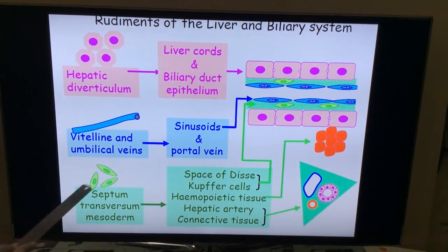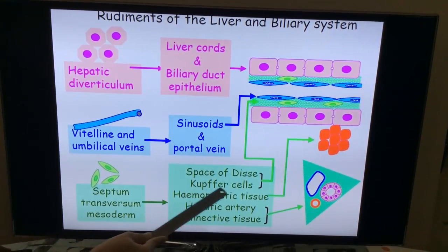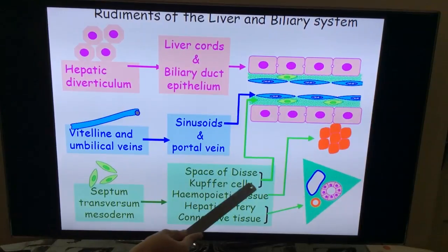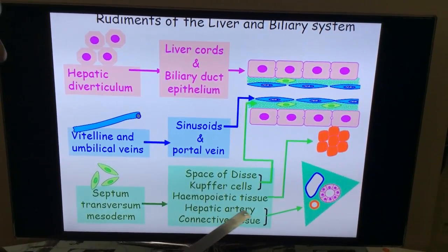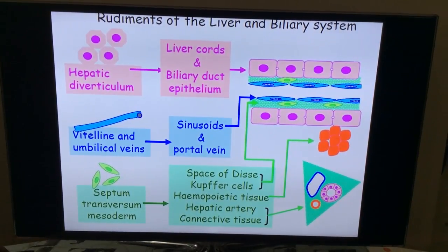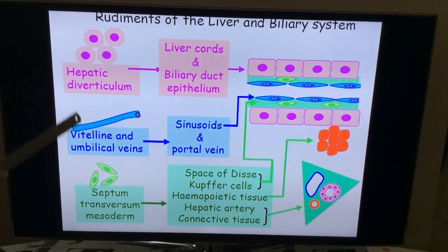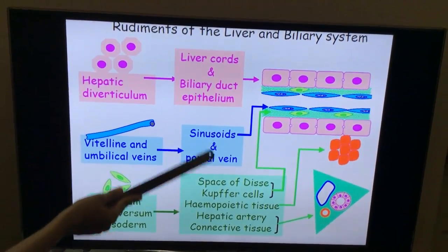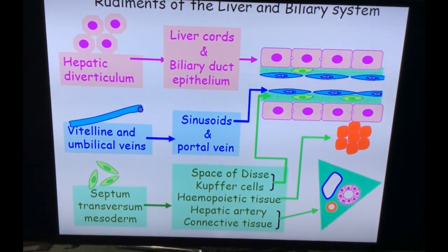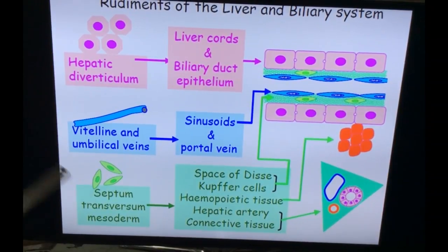The mesenchyme cells in the septum transversum give rise to other cells: the Kupffer cells which are involved in phagocytosis, hematopoietic tissues, hepatic artery, and other connective tissue present within the liver. So these are the embryological structures giving contribution to the cells which form the liver and the biliary system, with contribution both from the endoderm and the mesoderm.